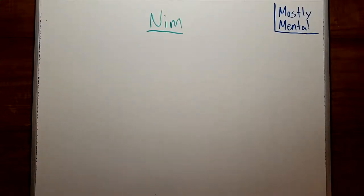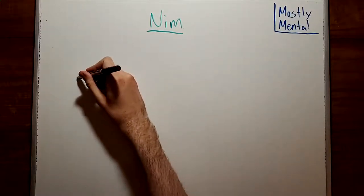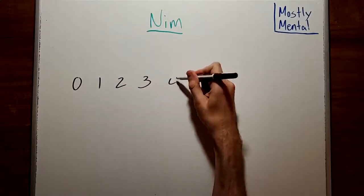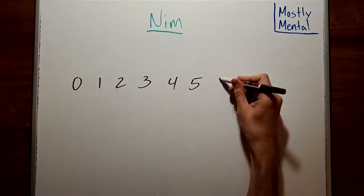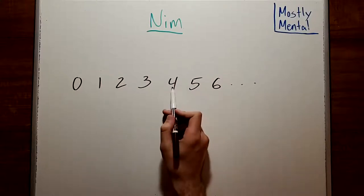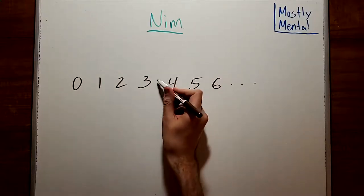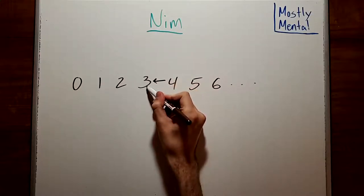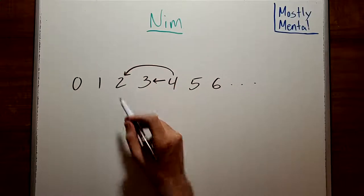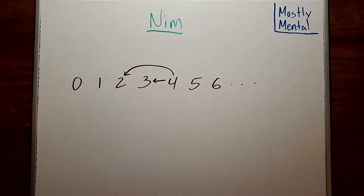How can we analyze this? One way is to just list out all of the possible positions. For this game, that's the number of counters in the pile. So 0, 1, 2, and so on. And we can draw arrows between them to represent each possible move. So for example, if there are four counters, we can take one and end up at three, or we can take two and end up at two. Let's draw in all the moves.